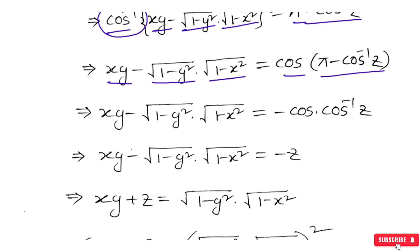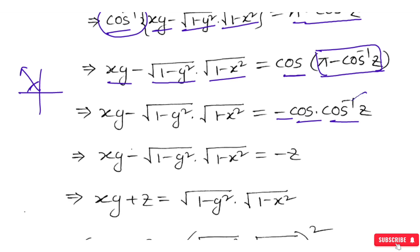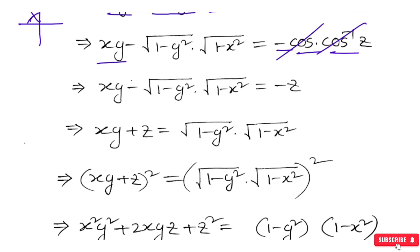So the corner becomes: xy + z = √(1−y²)·√(1−x²). And we have to figure out whether it's a first quadrant or second quadrant case. In the second quadrant, cosine is positive but the value becomes negative, so we have to be careful.